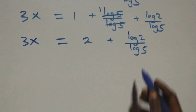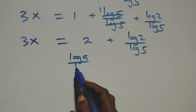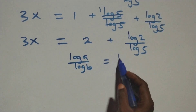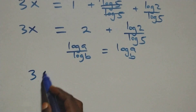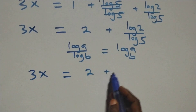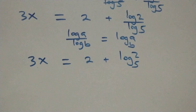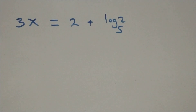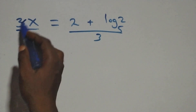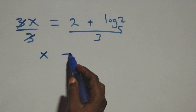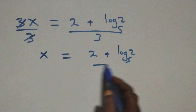We apply the change of base formula here: log a over log b can be written as log a to base b. So log 2 over log 5 becomes log 2 base 5. This gives us 3x equals 2 plus log 2 base 5. Dividing both sides by 3, the 3s cancel, and we have x equals 2 plus log 2 base 5, all over 3.